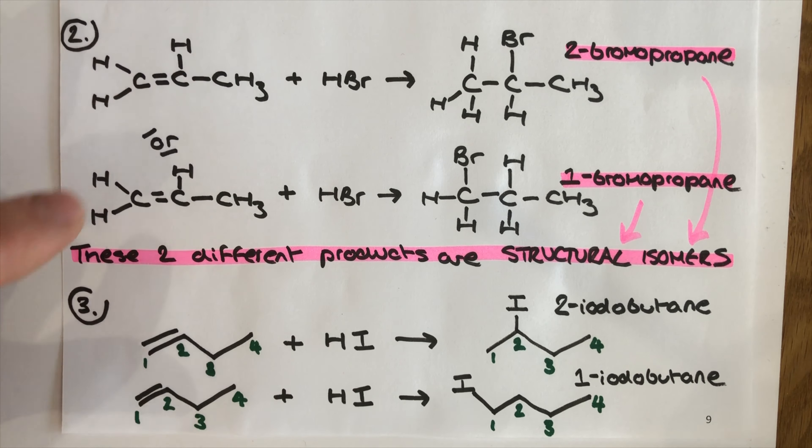A common mistake in exams is saying that 2-bromopropane is the major product because it is more stable as a product. That's not true at all. It's because the intermediate used to make it — the secondary carbocation — is more stable than the primary carbocation intermediate used to make 1-bromopropane. You've got to be really clear that it's about carbocation stability, not product stability, even though the two are linked.